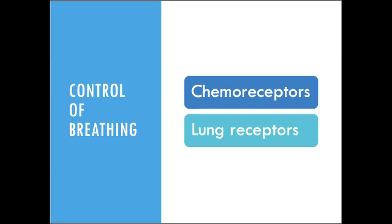Normally, blood CO2 level provides the primary stimulus for us to breathe. Lung receptors are located in the chest and lung and are sensitive to breathing patterns, lung expansion, lung compliance, airway resistance, and respiratory irritants. The respiratory centers use feedback from the lung receptors to adjust our ventilation.